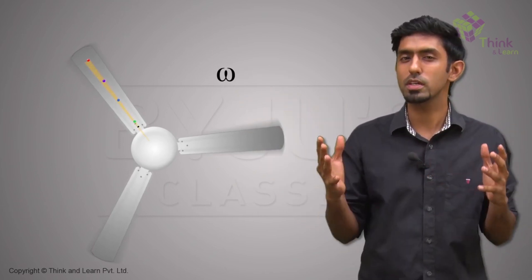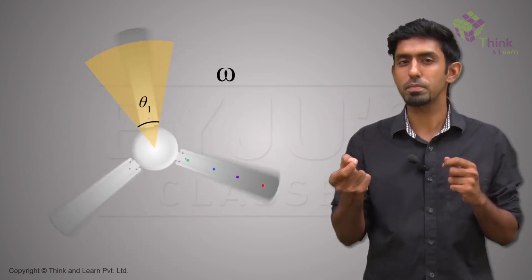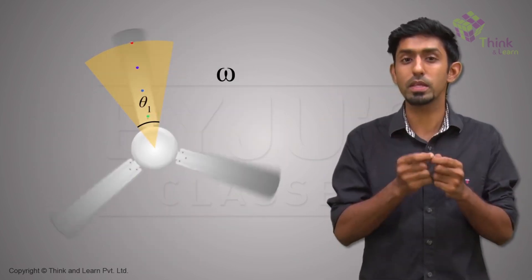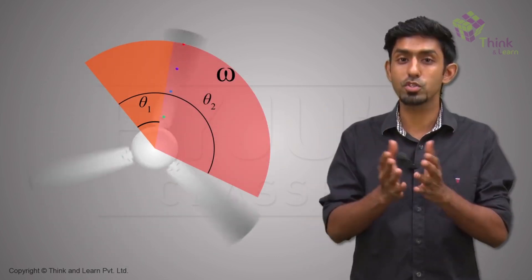And once you switch it on, what happens? They start covering a very small angle for a given time, which means their omega is very small to begin with. And as time goes, the fan starts going faster, which means it has a larger omega.